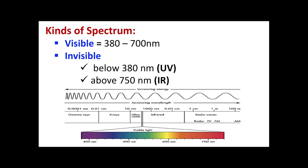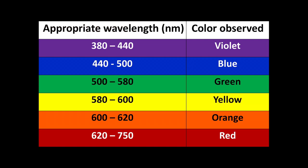In using the spectrophotometer, we select different wavelengths based on the analyte under study. Wavelength is the distance between two successive peaks. We have two kinds of spectra: visible and invisible. When the wavelength is between 380 to 700 nanometers, that's the visible spectrum. Below 380 nanometers is ultraviolet, and above 750 nanometers is infrared. This wavelength gives light its characteristic color, and we observe color if the wavelength is in the visible region. We need to set the wavelength correctly before analyzing our sample.